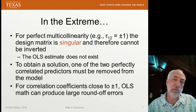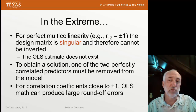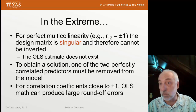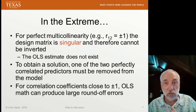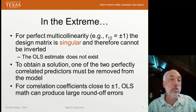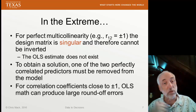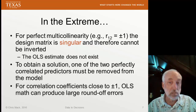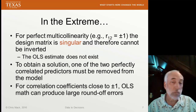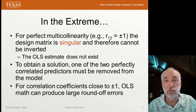Let's think about the extreme case. If we have perfect multicollinearity — that is, the correlation coefficient between variables is either plus one or minus one — then the resulting design matrix will be singular, meaning I can't invert it. If I try to invert it, I get division by zero, and as a result we cannot create an OLS estimate. We can't create coefficients for both correlated parameters. The only way to obtain a least squares solution is to remove one of those two perfectly correlated variables from the model.